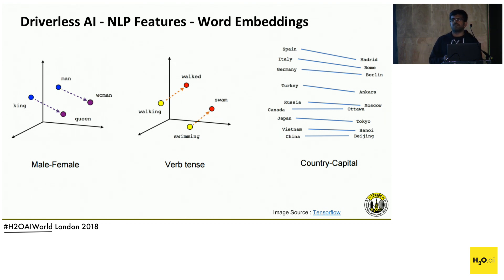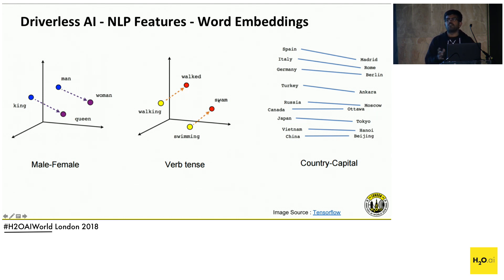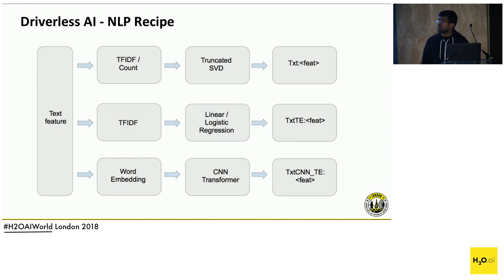That relationship is captured by word embeddings. Word embeddings are n-dimensional vector representations for each word. These are some examples taken from the TensorFlow website showing how word embedding features are extracted. This is exactly what goes into our recipe.